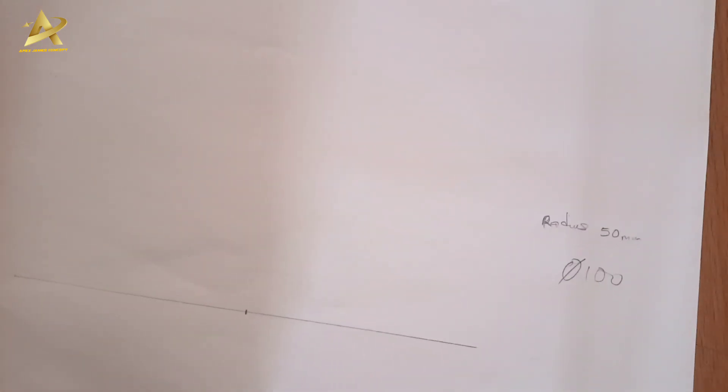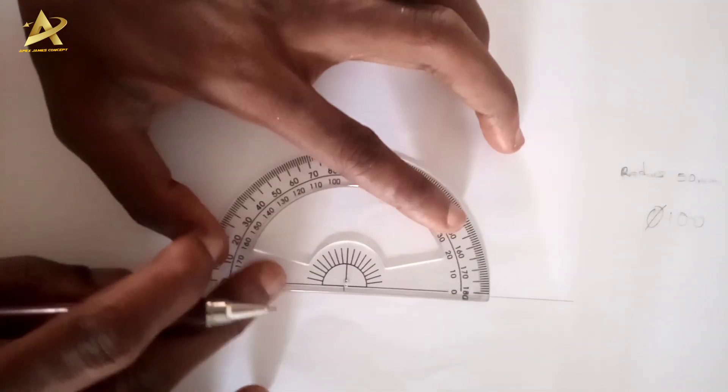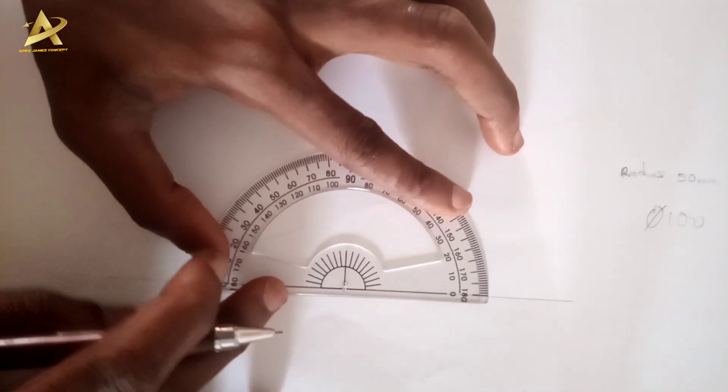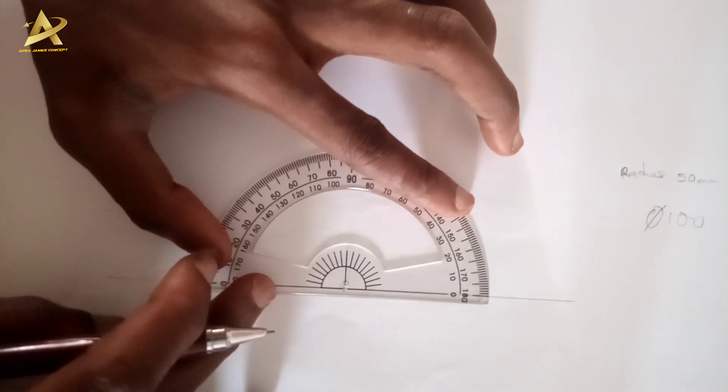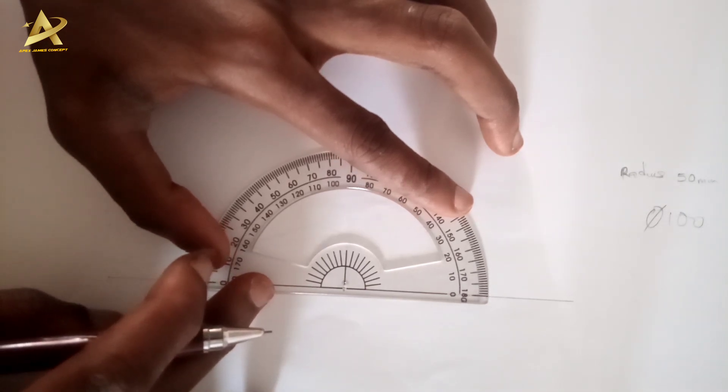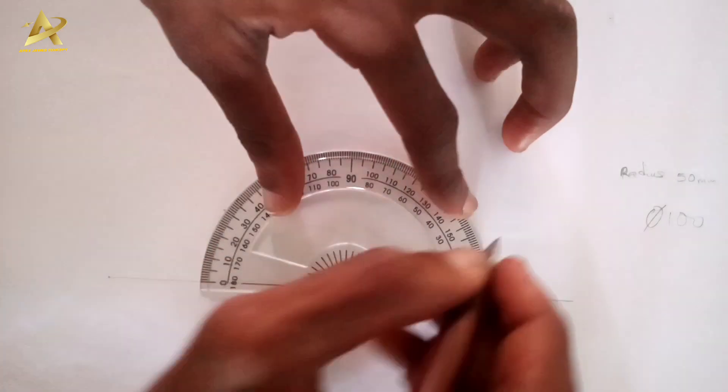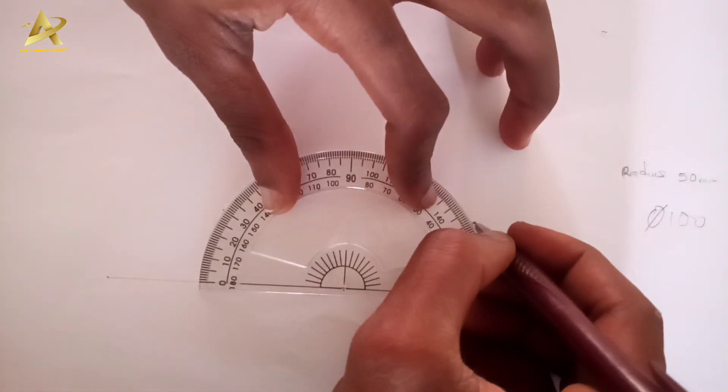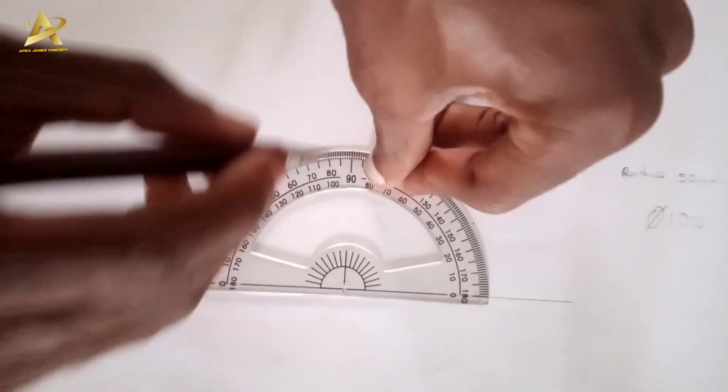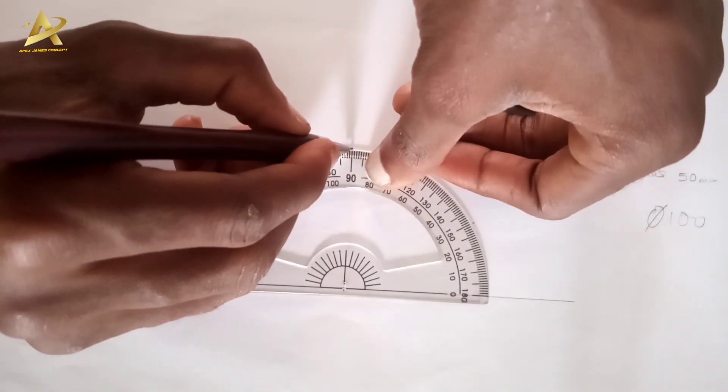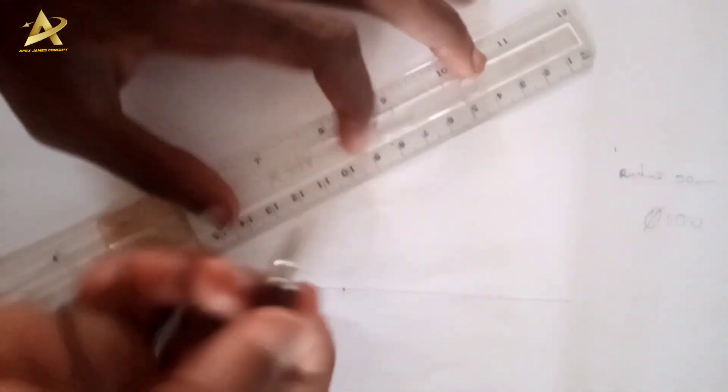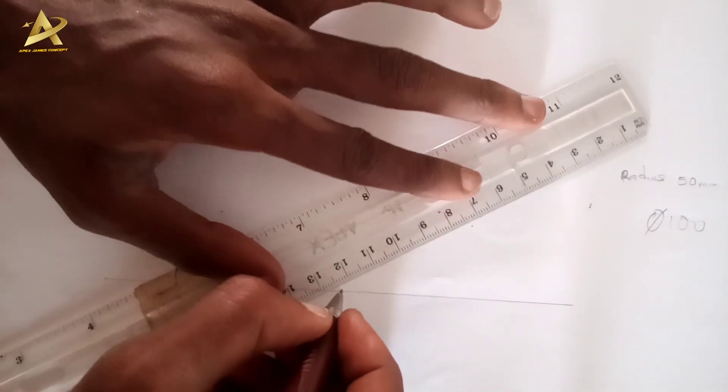On this point I will draw my isometric axis - 30 degrees, 30 degrees on the other side, and 90 degrees. I'll draw my lines to bring out the axis.